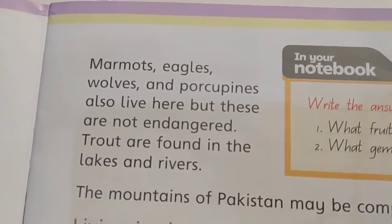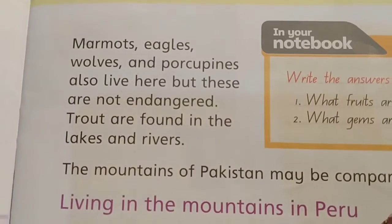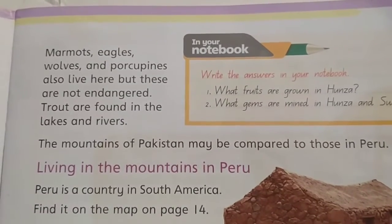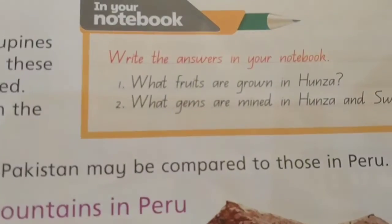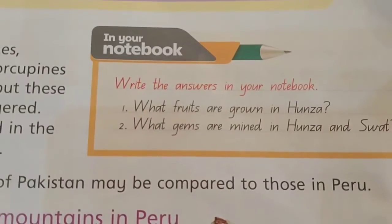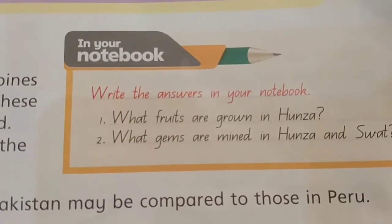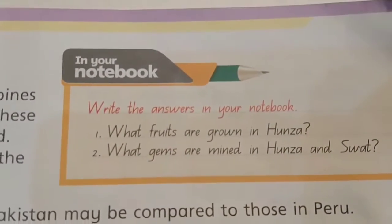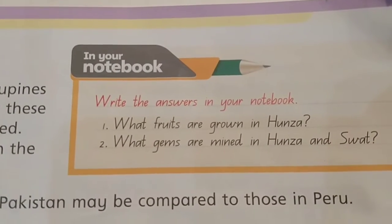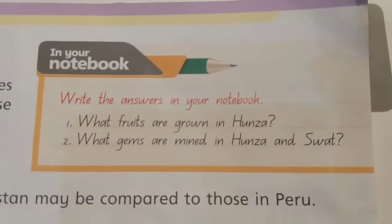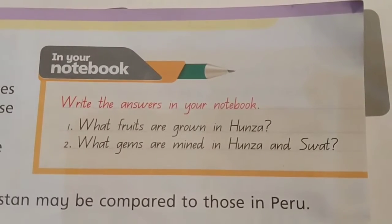Can you tell me about some birds and other animals? Marmots, eagles, wolves, and porcupines also live here. The fruits grown in Hunza include barley, apricots, apples, pears, peaches, plums, grapes, and figs. The gemstones mined in Hunza and Swat include rubies, topazes, garnets, emeralds, and sapphires.